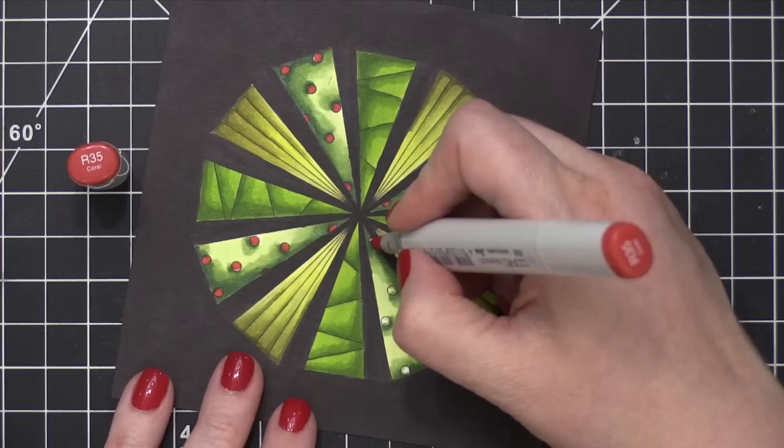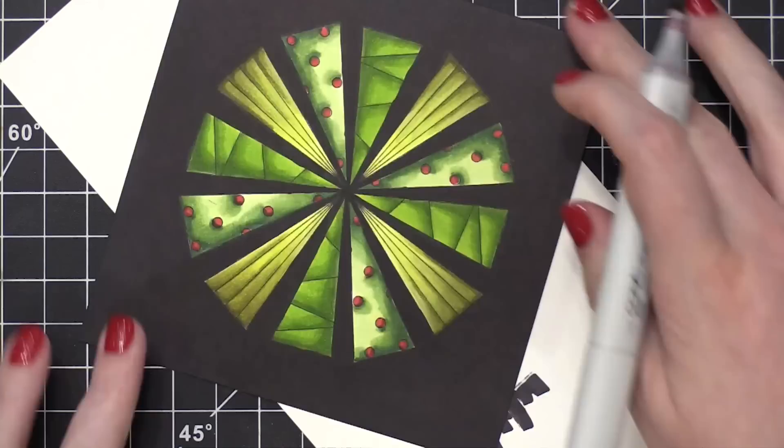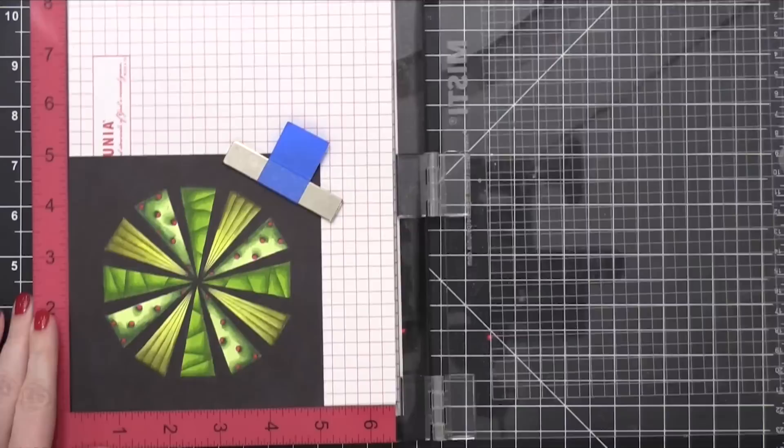I then grabbed an R35 and colored the ornaments on the trees. I also grabbed an R39, which is just a little bit of a darker red, and added a little bit of shading at the bottom of those ornaments on the tree.